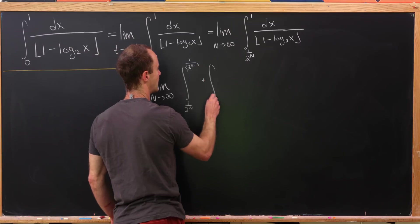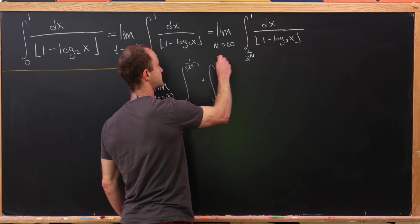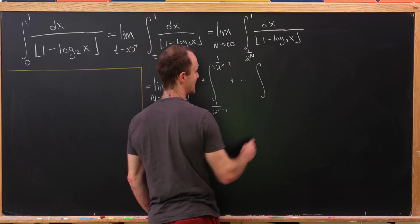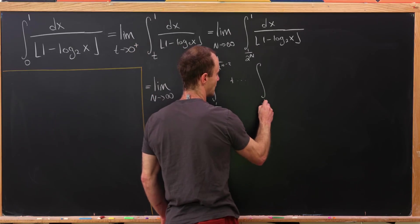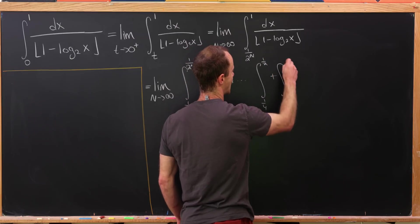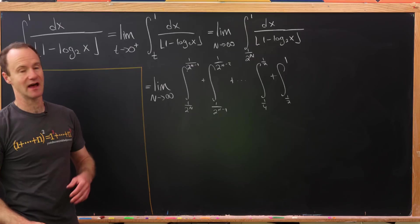I'm going to write it like this at first: the integral from 1 over 2 to the n to 1 over 2 to the n minus 1 plus the integral of 1 over 2 to the n minus 1 to 1 over 2 to the n minus 2, all the way down to the integral from 1 quarter to 1 half plus the integral from 1 half to 1. So I think that encodes everything.